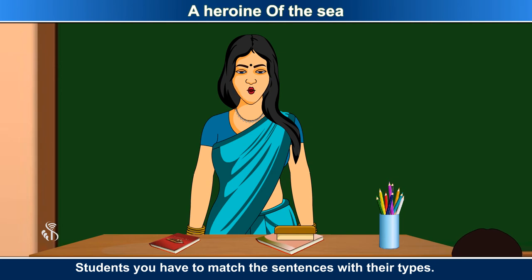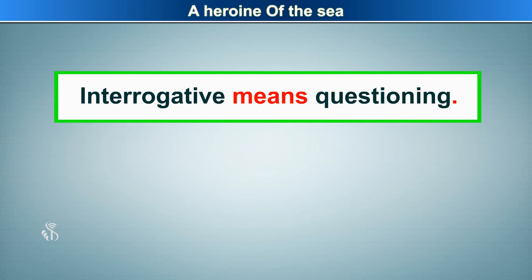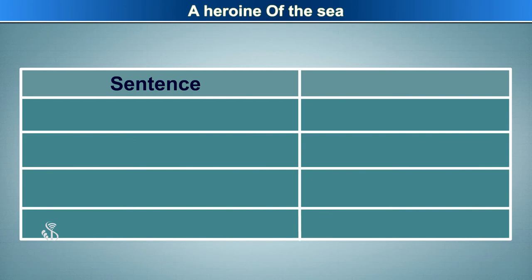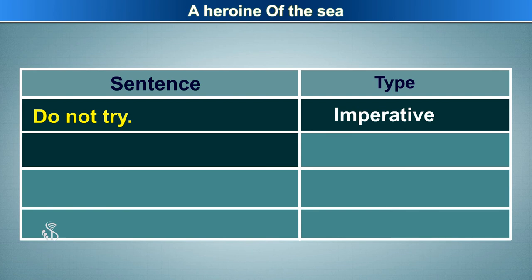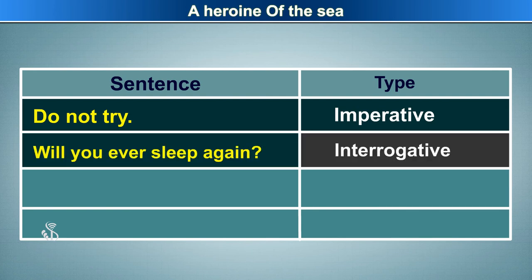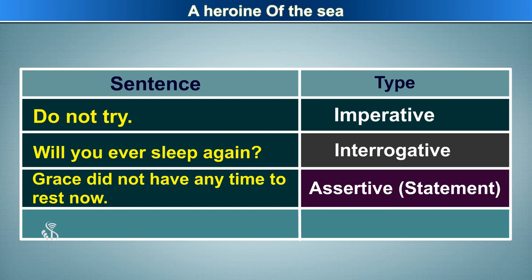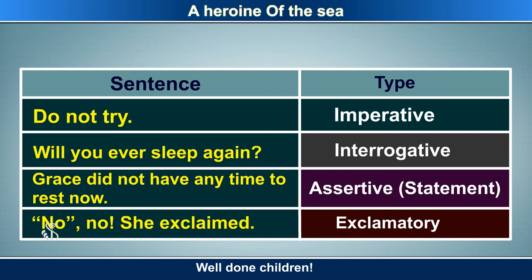Students, you have to match the sentences with their types. Interrogative means questioning. Imperative means commanding. 'Do not try' — Imperative. 'Will you ever sleep again?' — Interrogative. 'Grace did not have any time to rest' — Assertive. 'No, no, she exclaimed' — Exclamation.